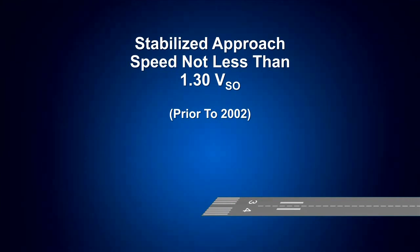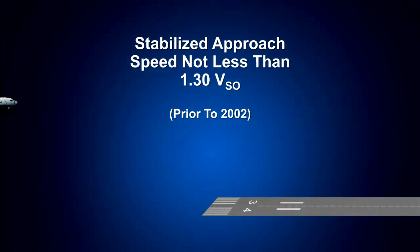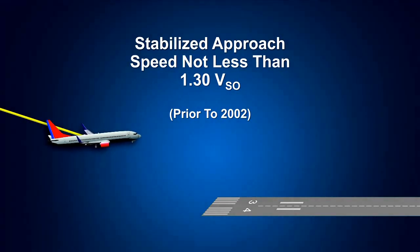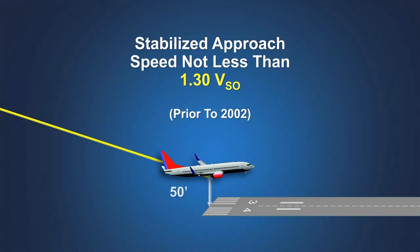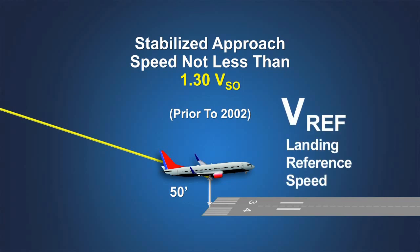Prior to 2002, the certificated landing distance was based on a stabilized approach and an approach speed not less than 30% above the stalling speed in the landing configuration, or 1.3 VSO. A speed greater than 1.3 VSO could be used if needed for acceptable airplane handling characteristics. Over the years, this final approach speed became known by the term VREF, or landing reference speed. However, this particular V speed was never part of the certification rules.